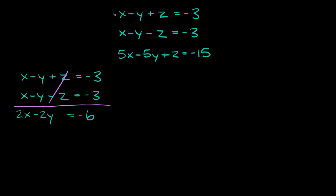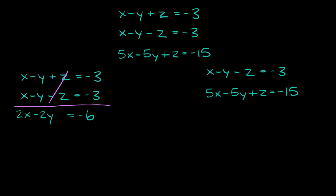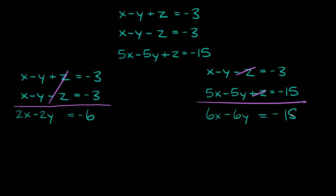Now remember whenever you're solving three equations with three variables you have to use all three. So now we have to use the third one. We can use the third one and then pick either the first or the second — let's just pick the second. We just need to eliminate the same variable we just eliminated over here, the z's. We have a negative z and a positive z right there. So if we add these together we're gonna get 6x minus 6y, those go away, and this is equal to negative 18.